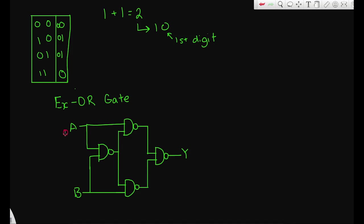Let's check 0, 1: tracing through the circuit gives output 1 — correct. And for 1, 1: tracing through all four NAND gates gives output 0, which is also correct. So the XOR gate truth table is verified.